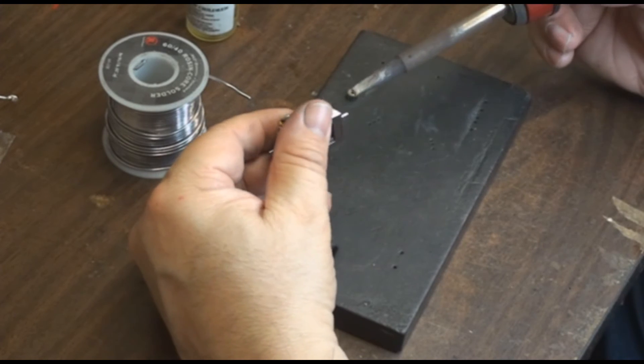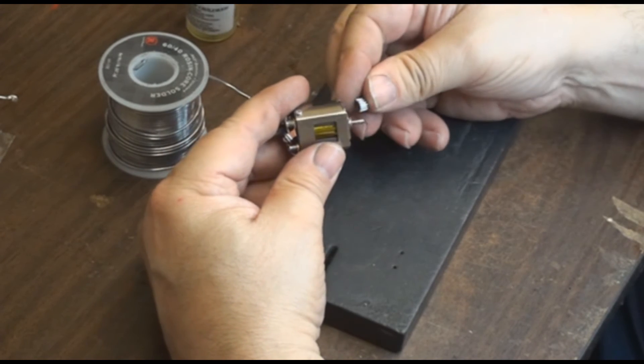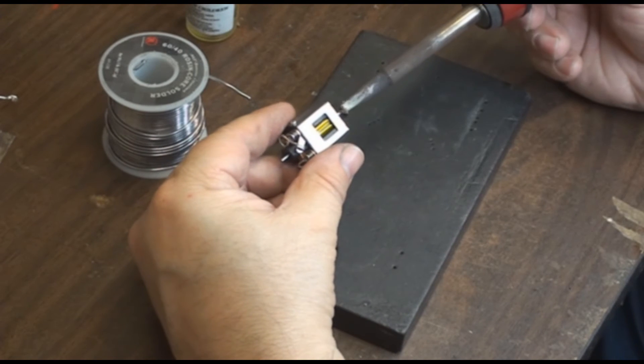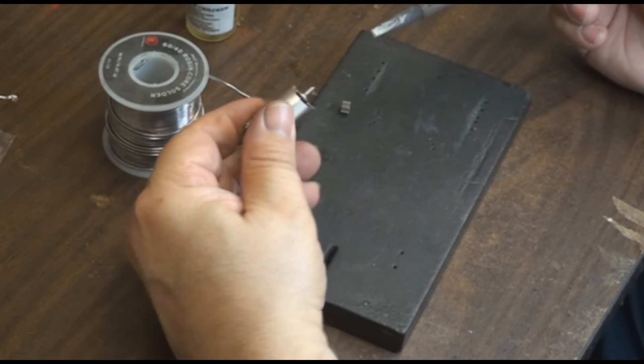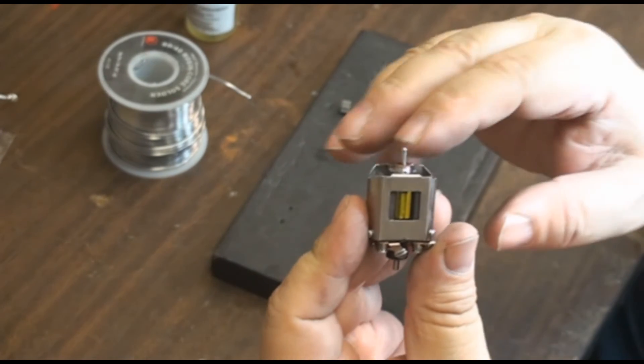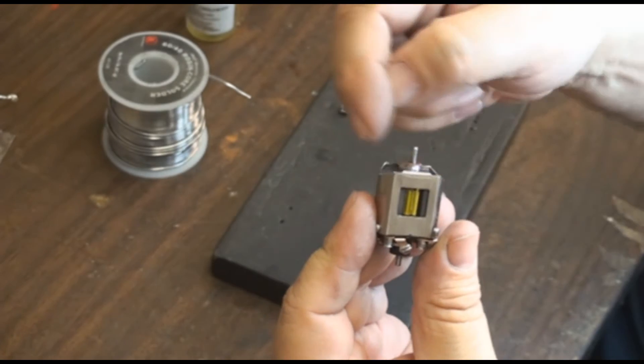You want to tin it all the way around, basically the length of the pinion. You can see that's tinned all the way around the shaft.